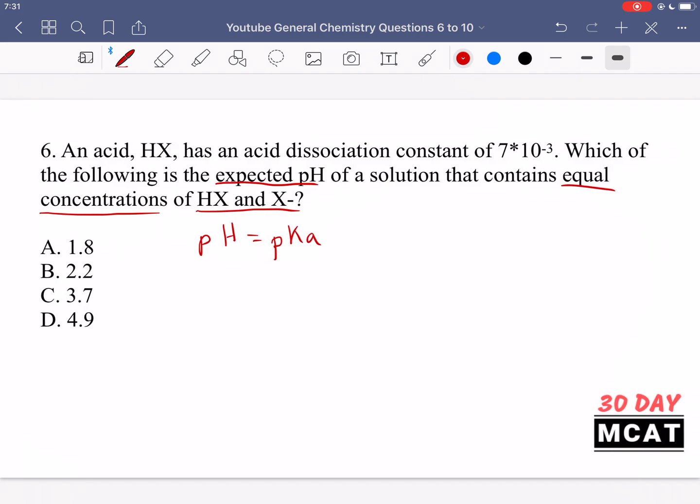And the pKa we can get from the Ka, which is given to us, the acid dissociation constant. So pKa is just negative log. Negative log of 7 times 10 to the negative 3, that ends up being around 2.2. So B is our correct answer.